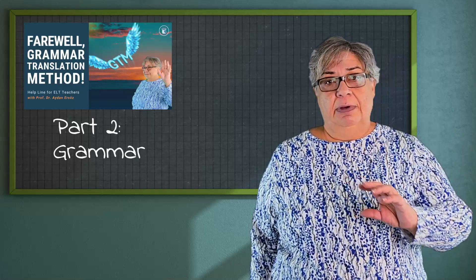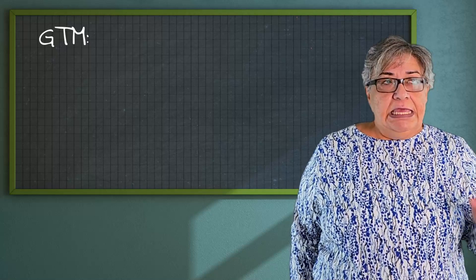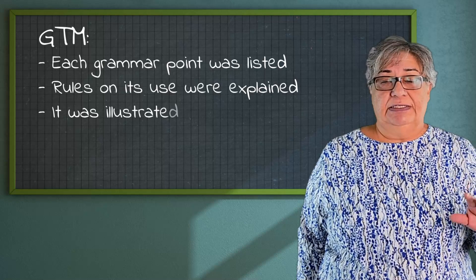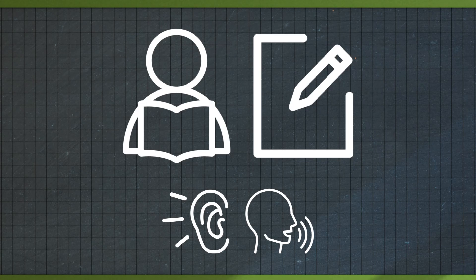In GTM — the grammar translation method — each grammar point was listed, rules on its use were explained, and it was illustrated by simple sentences. Reading and writing are the major focus. Little or no systematic attention is paid to speaking and listening. Vocabulary selection is based solely on the reading texts used, and words are taught through bilingual word lists, dictionary study, and memorization.